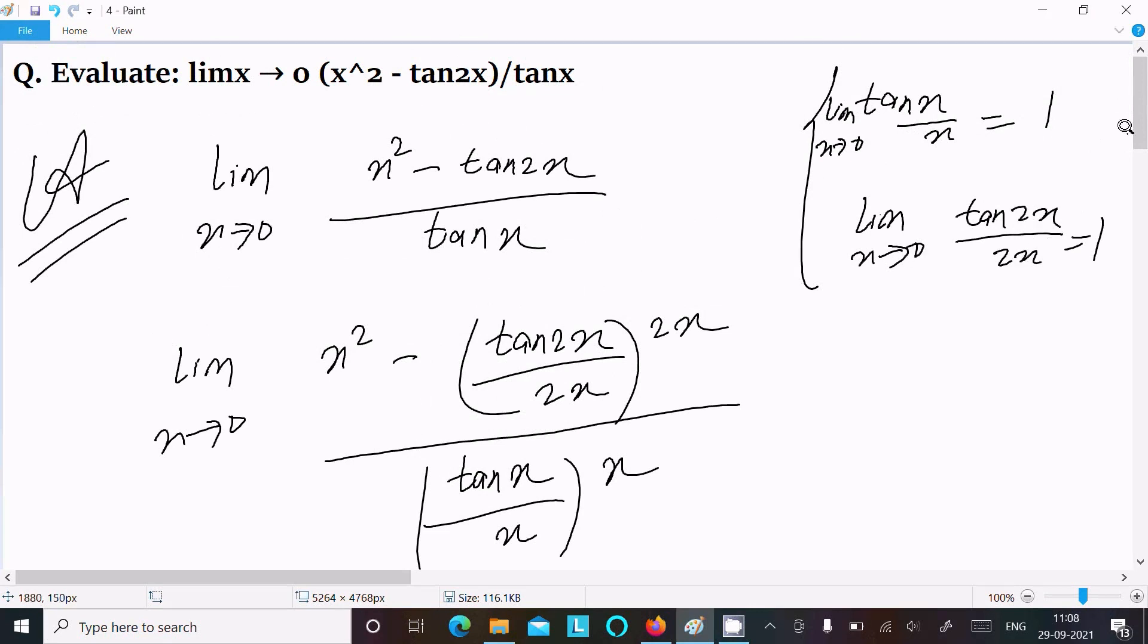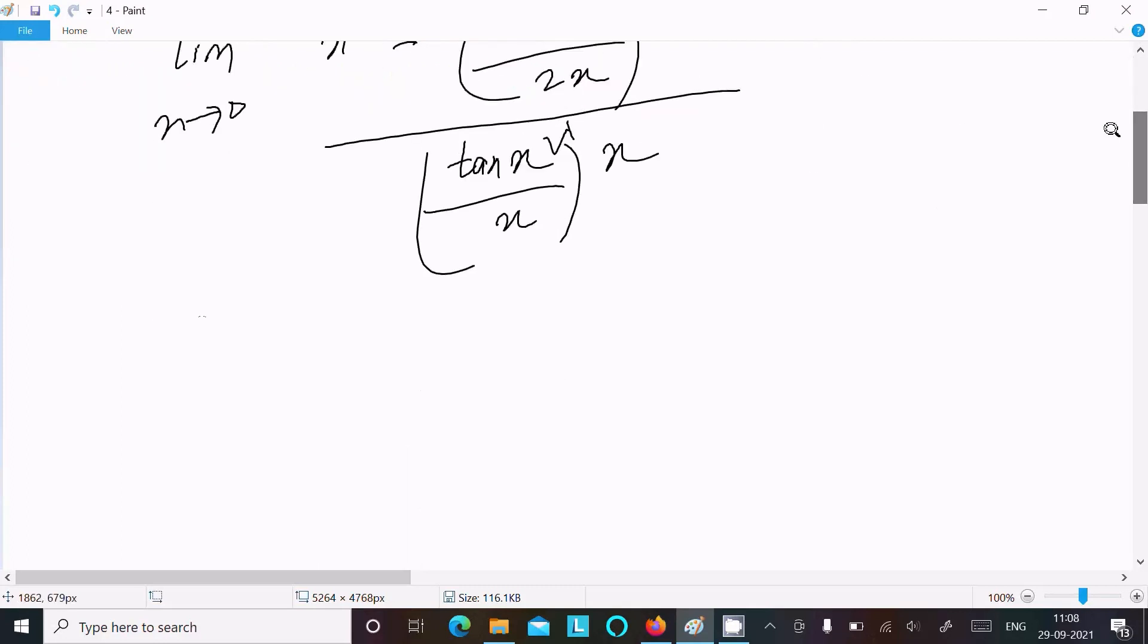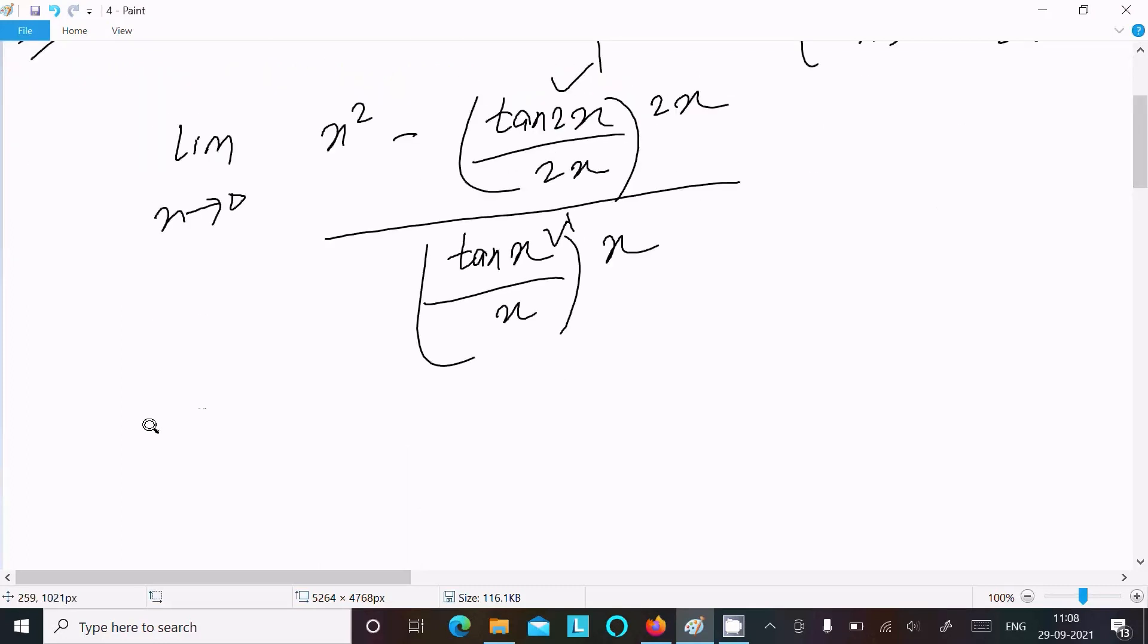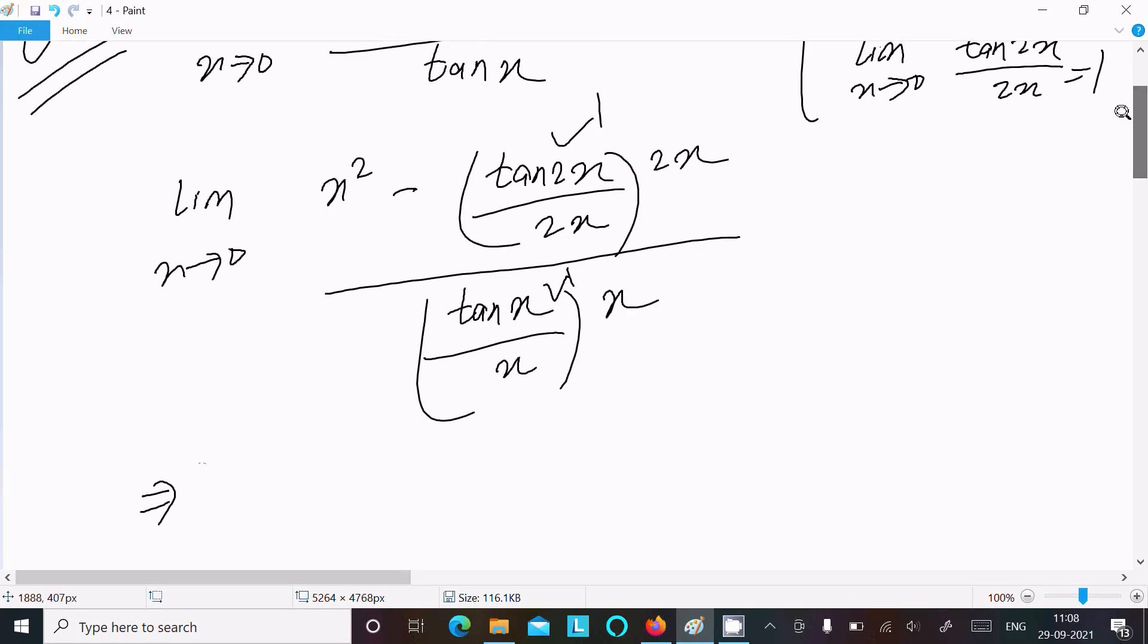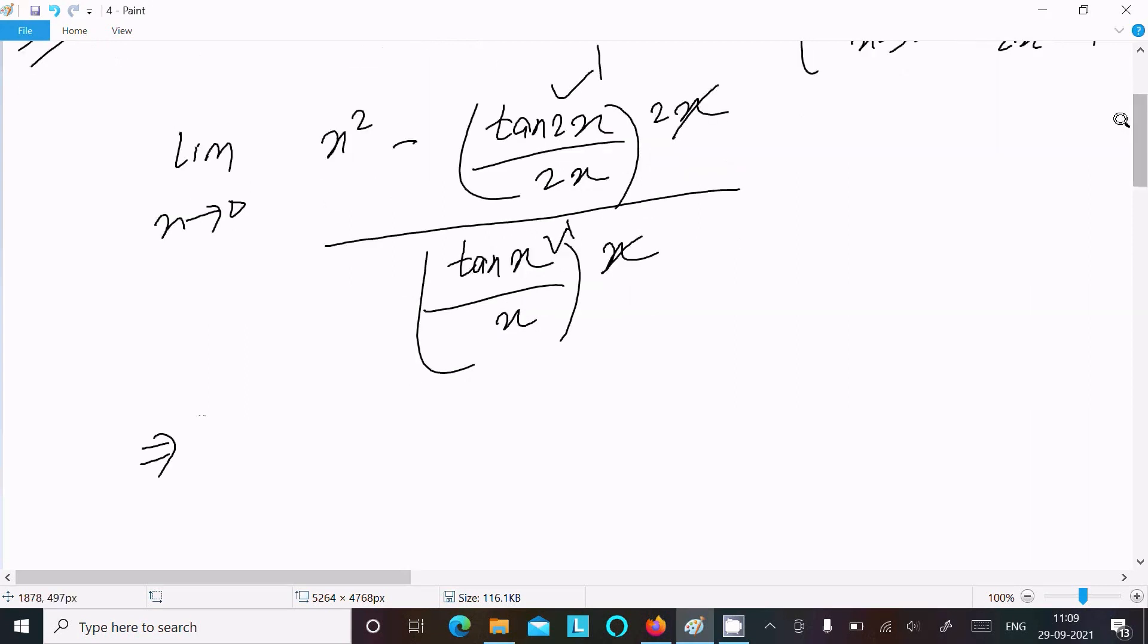After that, here tan, limit as x tends to 0, tan2x by 2x, that is equal to 1. So this returns 1, this also returns 1. Okay, so now here, this x and x, that cancels.